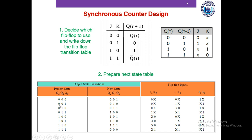In the next rows where Q2 transitions from 0 to 0, we again write J=0 and K=X. In the fourth row, however, Q2 has a 0-to-1 transition, and looking at the transition table we see that a 0-to-1 transition requires J=1 and K=X. So we put 1X there. In this manner we complete the J2 and K2 columns.